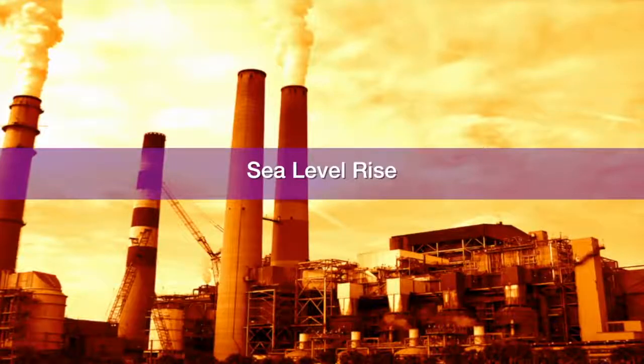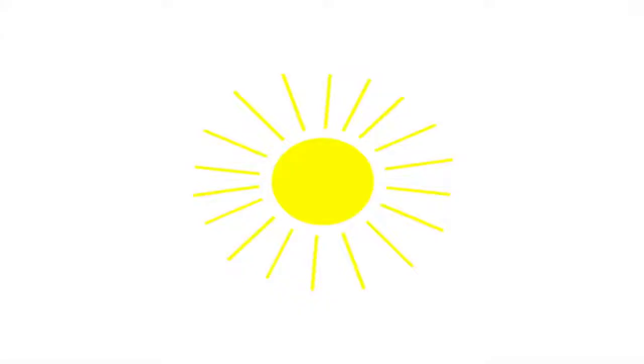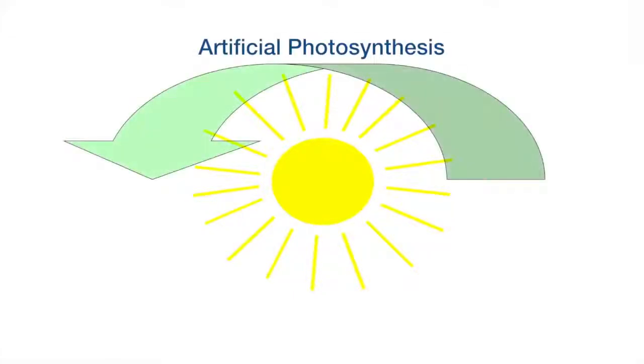So in order to mitigate these problems, we need to introduce more and more renewable energy technology into our overall energy portfolio. One such technology is called artificial photosynthesis — a process that can convert solar energy and store it into chemical bonds.